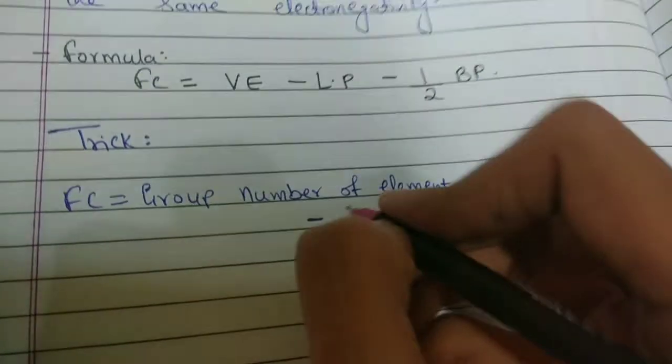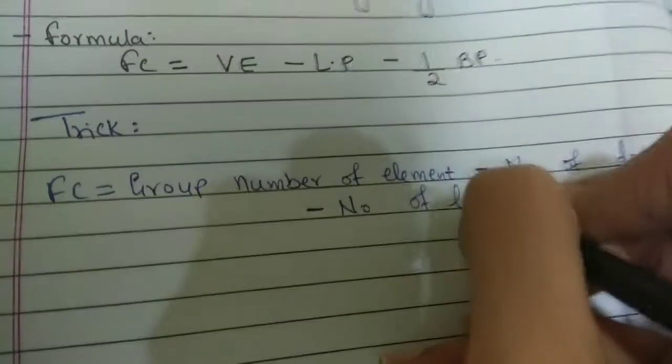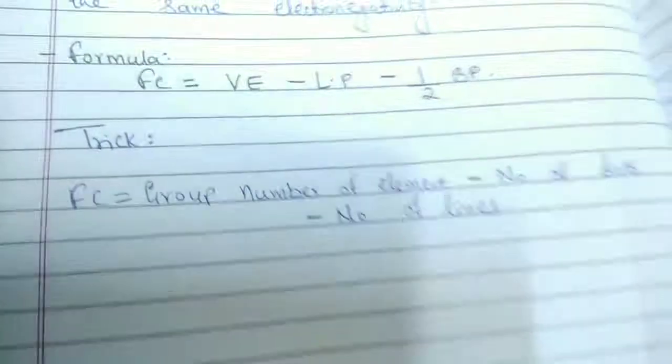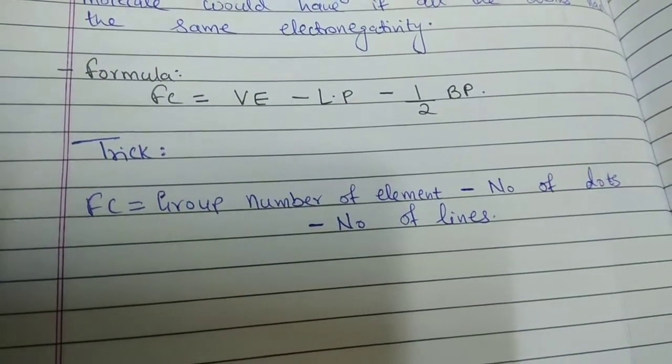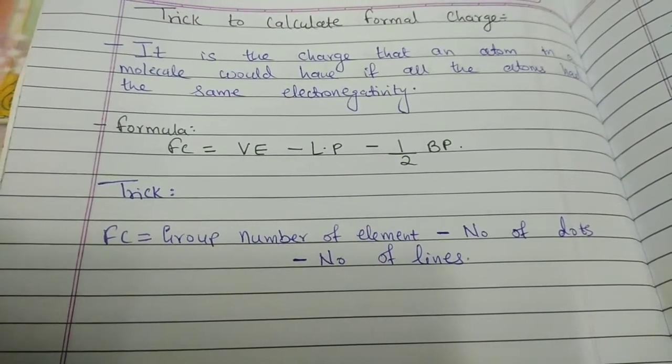And then, instead of half BP, we write number of lines. Now, number of lines means single bond or double bond, the bond actually. So, let us start with some examples to make the concept easier.